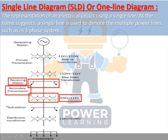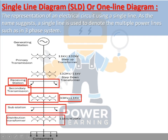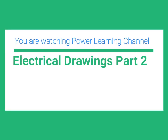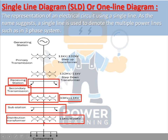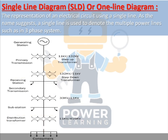After the receiving station, the system continues to secondary transmission with another transformer stepping down from 33 kV to 11 kV, followed by another substation. Then we have a distribution transformer stepping down from 11 kV to 415 V. The final single line shows the transmission between the customer and the distribution transformer — the whole network is represented on one single diagram.